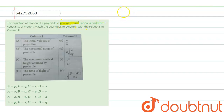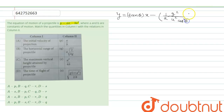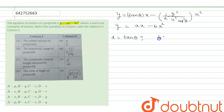We know the standard equation of motion of a projectile is y = tan θ · x − (g / 2u²cos²θ) · x². Comparing it with the given equation y = ax − bx², we get a = tan θ and b = g / 2u²cos²θ.